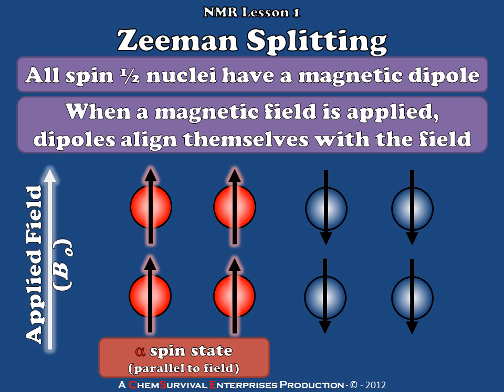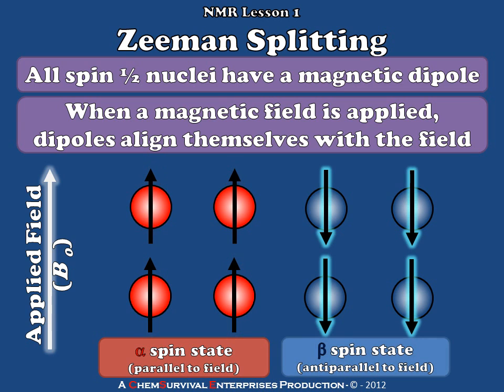The parallel orientation, known as the alpha spin state, and the anti-parallel orientation, known as the beta spin state. It is the difference in energies between these two spin states that is the Zeeman splitting.